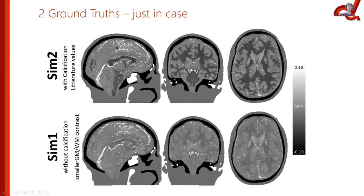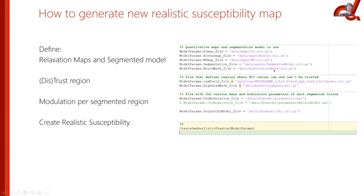If you want to create more ground truths, it's quite simple. In our data sharing collection, you get a file with your relaxation maps and segmented model. You define trust regions where your R2* maps may not be reliable, define a modulation per segmented tissue — how much modulation based on R1 or R2* you want in white matter, gray matter, or other regions — introduce random values within each tissue, and run the script to generate your new model.